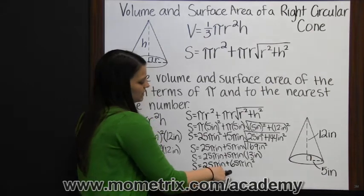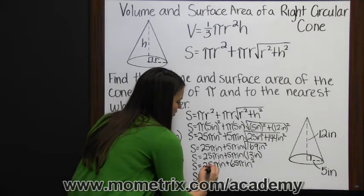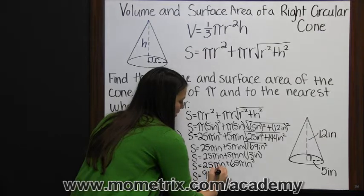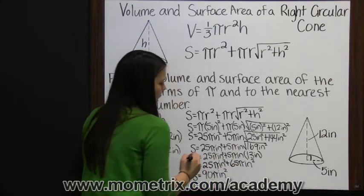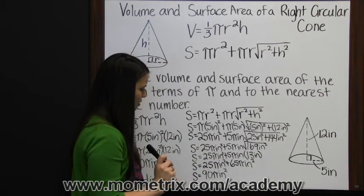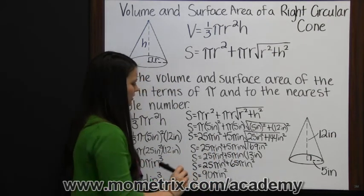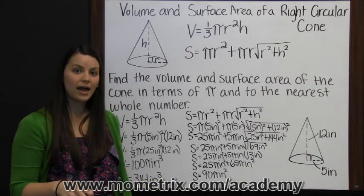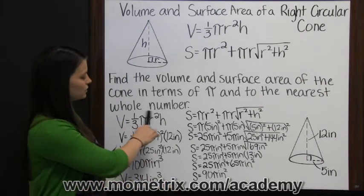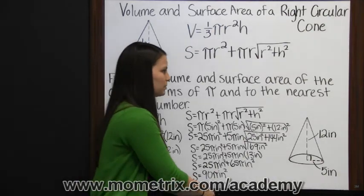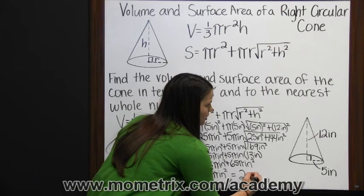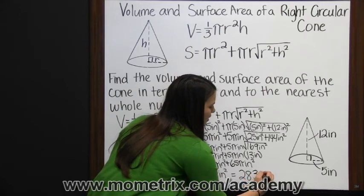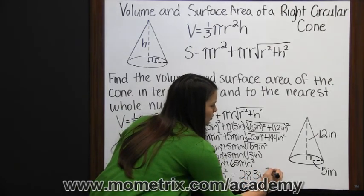Twenty-five and sixty-five: twenty and sixty is eighty, five and five is ten — so ninety pi inches squared. That's our answer in terms of pi. Then to find it to the nearest whole number, we multiply by pi. Ninety times pi is two hundred eighty-three inches squared.